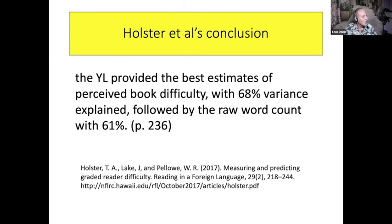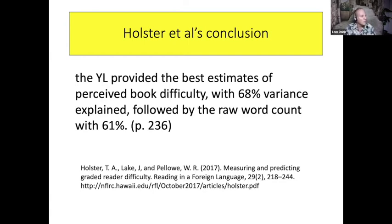Their conclusion was that the Yomi Yasusa levels provided the best estimates of perceived difficulty with 68% of the variance explained, followed by the raw word count with 61%. Of course, the raw word count will correlate well with difficulty because easy books have very few words and more difficult books have a lot of words. They showed in their table that M Reader was down around 30% variance, but if Yomi Yasusa had been kicked out of the statistical measurement, M Reader would have gone up. The M Reader rating is less accurate than Yomi Yasusa simply because it's a 10-point scale, not a 100-point scale, so the rating is much coarser.